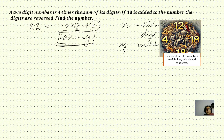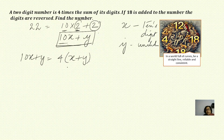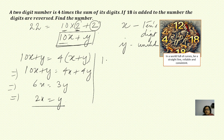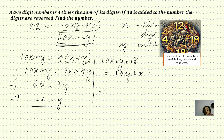The number 10x plus y is 4 times the sum of the digits, so 10x plus y equals 4 times x plus y. Simplifying, we get 10x plus y equals 4x plus 4y, which gives 6x equals 3y, or y equals 2x. For the second part, if 18 is added to the number, the digits are reversed: 10x plus y plus 18 equals 10y plus x, where y becomes the tens digit and x becomes the units digit.